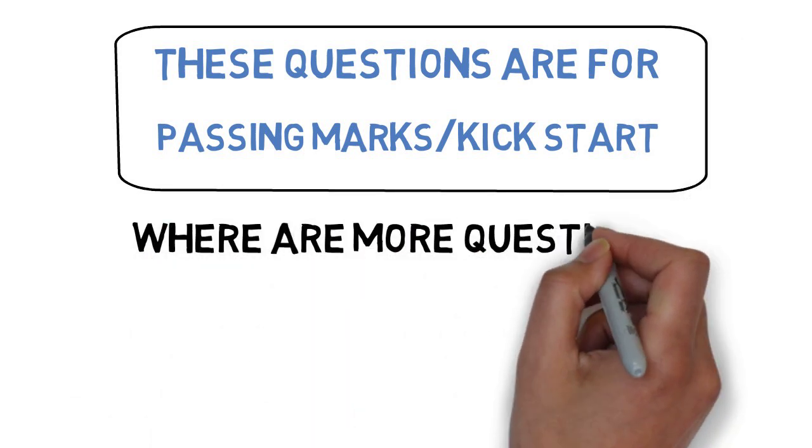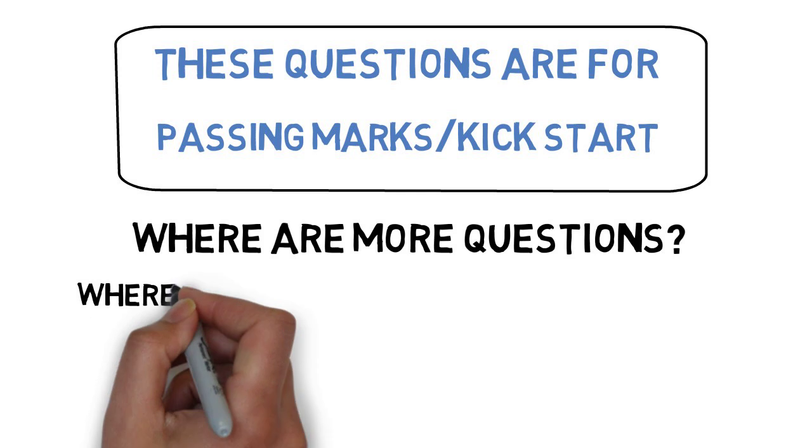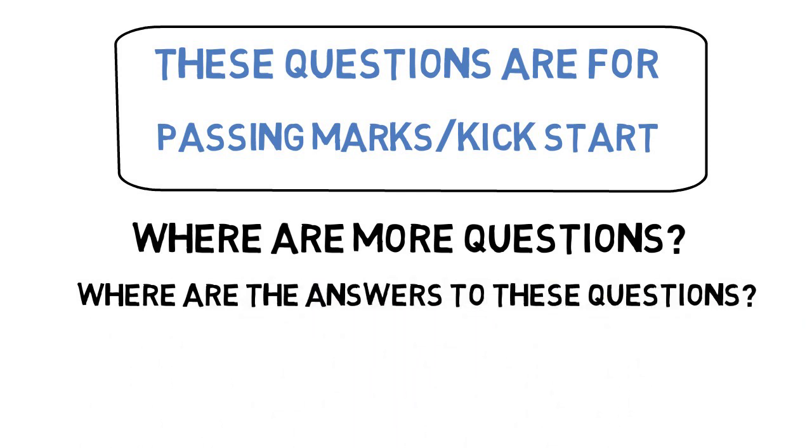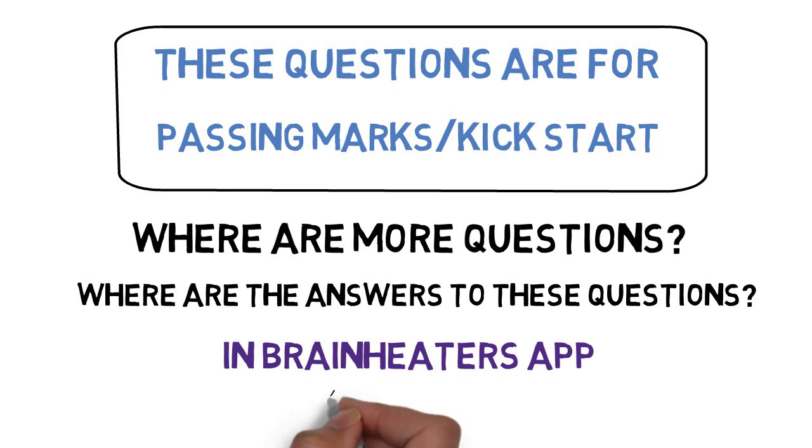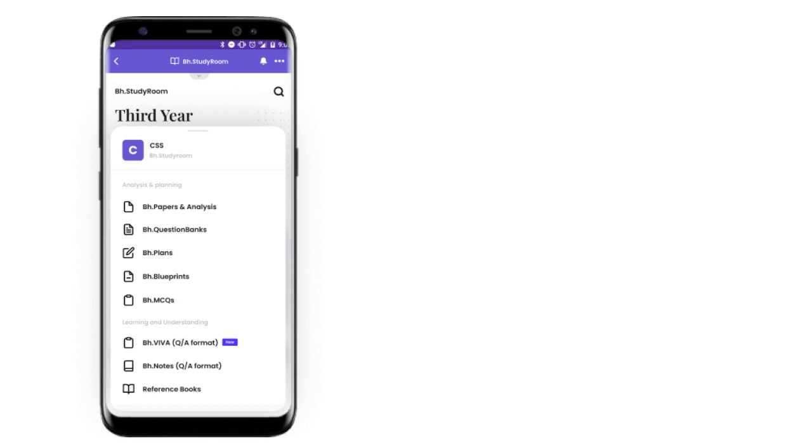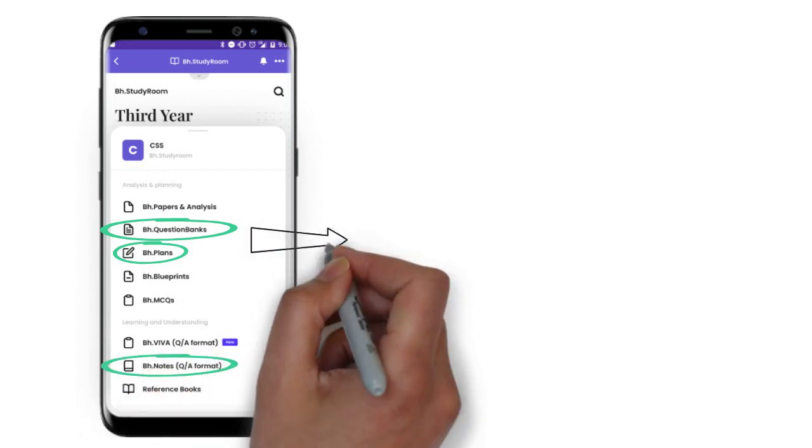You'll get three plans depending on your aim: passing marks questions, average marks questions, and scoring questions. All answers are already available in the BH notes. Once you're done with the BH plans, go to the BH question banks and you're good to go for the exam.